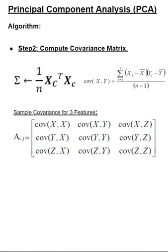And the diagonal elements of this particular matrix is nothing but the variance of the data series X, Y, and Z, respectively.